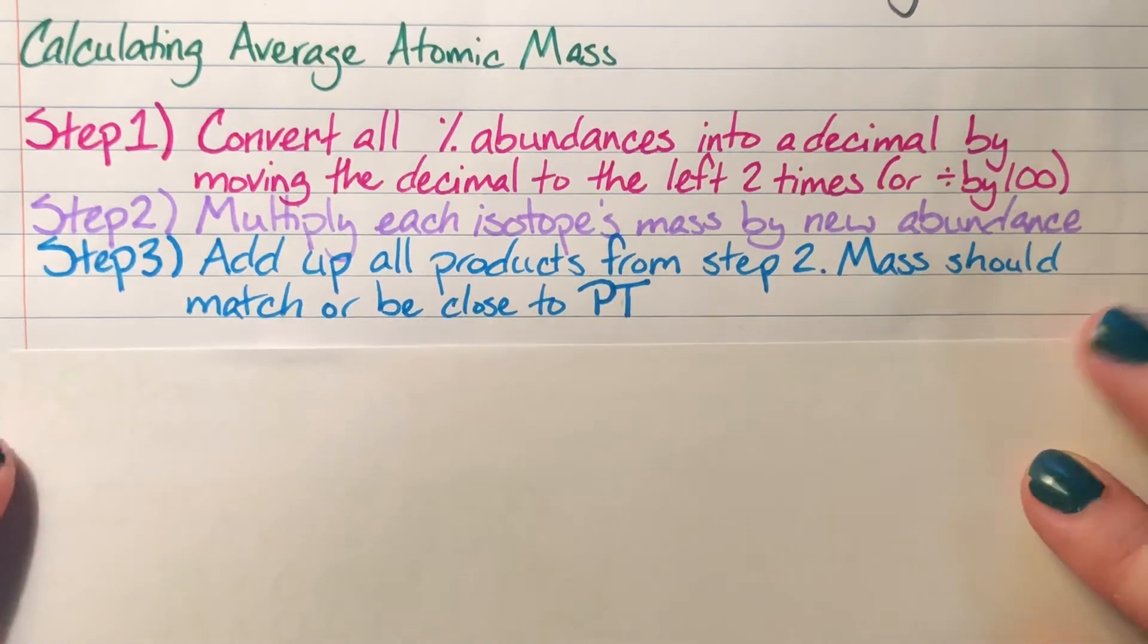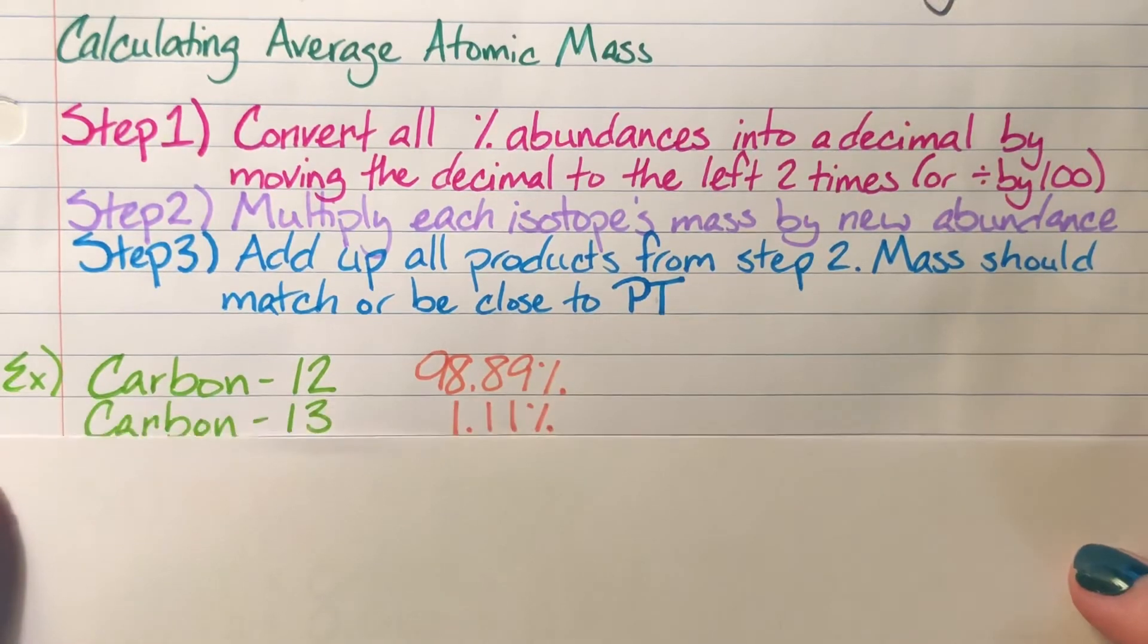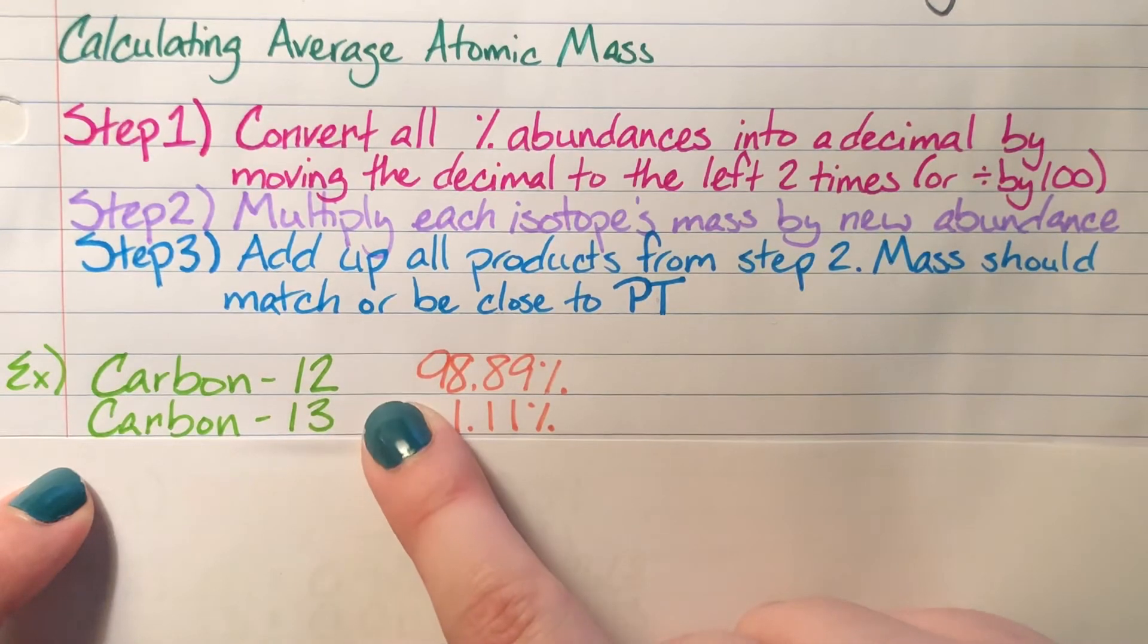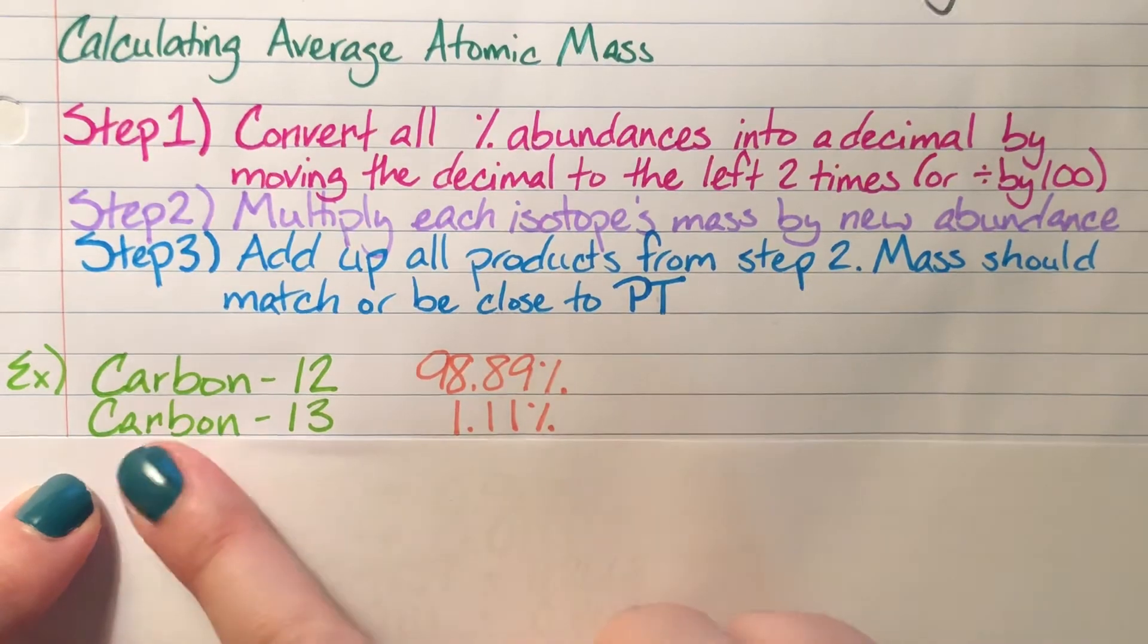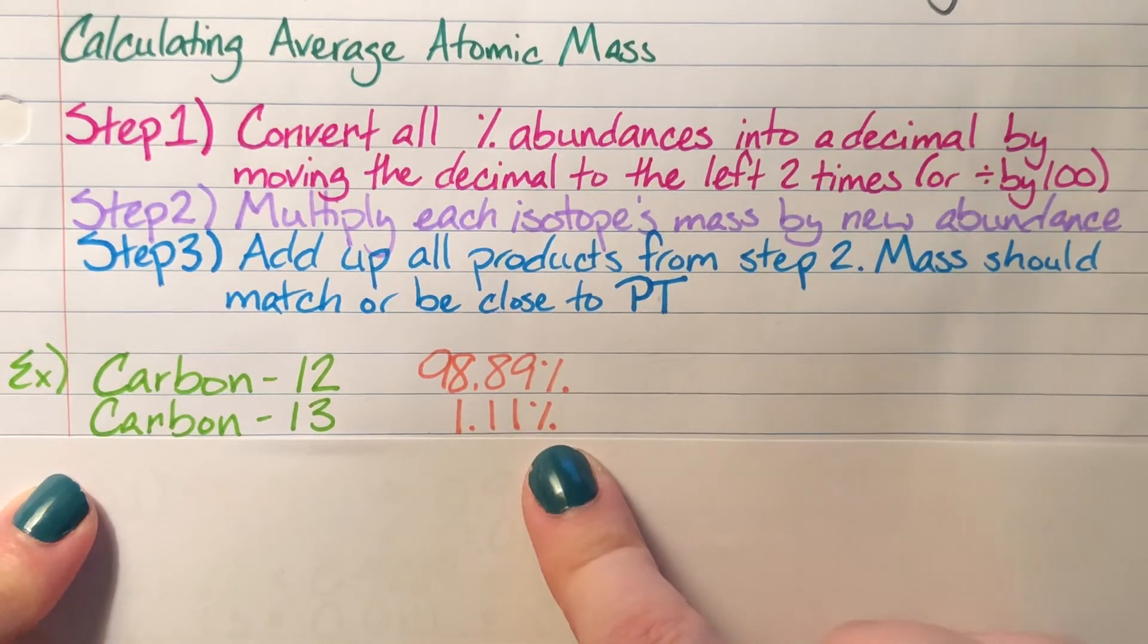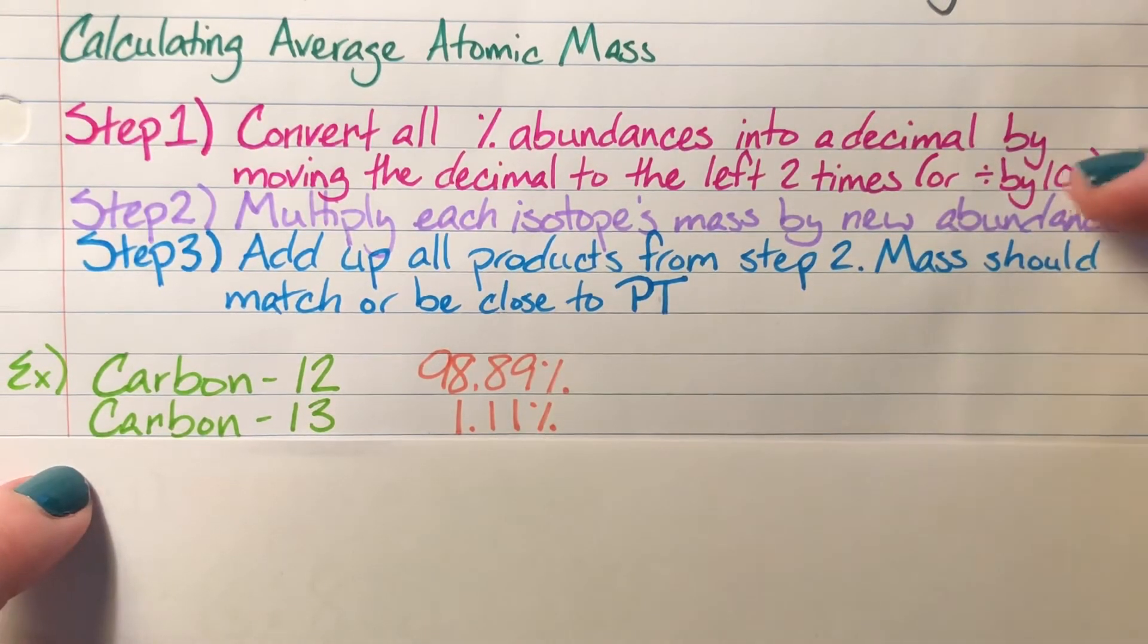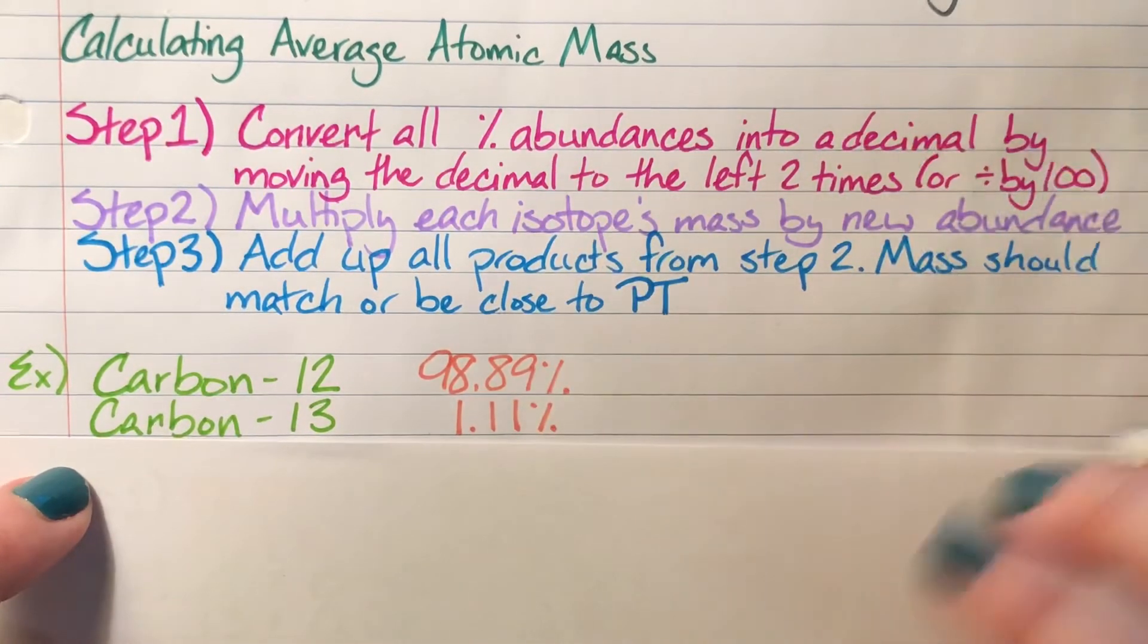Let's do an example. I have carbon-12 and carbon-13 with their respective abundances written next to them. The likelihood of finding carbon-12 on Earth is 98.89 percent, whereas carbon-13 is 1.11 percent. Looking back at the steps, step one says I need to convert all percent abundances into decimal form.